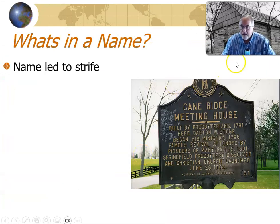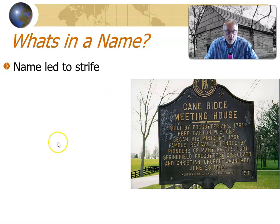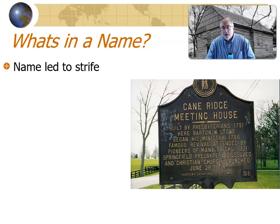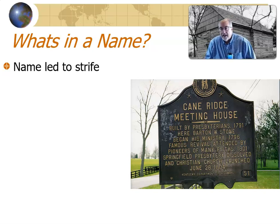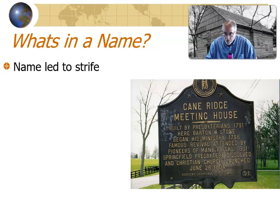Out front of the Cane Ridge Meeting House, a historical marker from the Kentucky Department of Highways reads: built in 1791 by the Presbyterians; Barton W. Stone began his ministry in 1796; the famous Cane Ridge Revival of 1801; the Springfield Presbytery dissolved here; and the Christian Church launched June 28, 1804. This is where we can say the Christian Church begins — certainly here in Kentucky — and where the Stone Movement, which will grow over the years, got its start right here at the Cane Ridge Meeting House.